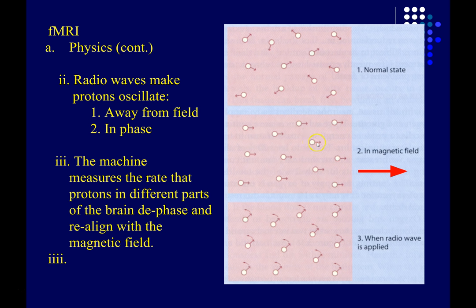The protons are not just sitting still. Like a spinning top, the axis can kind of precess — it wobbles. There's a formula called the Larmor frequency that tells us how fast it's going to wobble based on the strength of the magnetic field. We can use that to send in radio waves — electromagnetic waves — at the same frequency as these protons are wobbling. They start to oscillate away from the magnetic field and spin in phase with one another.